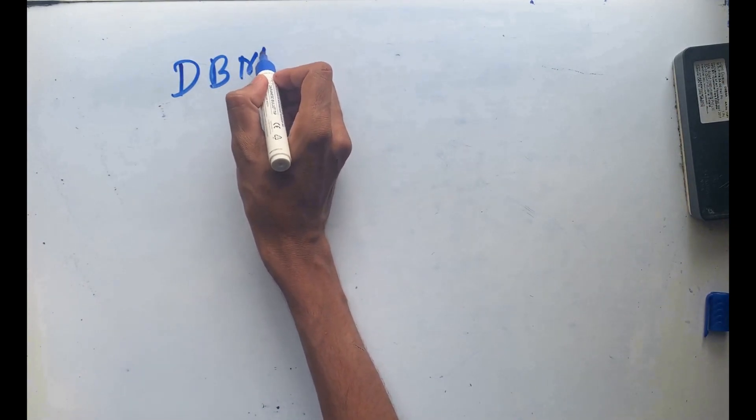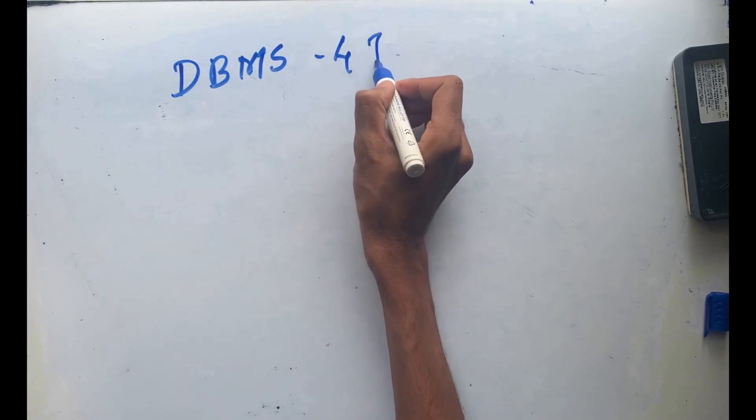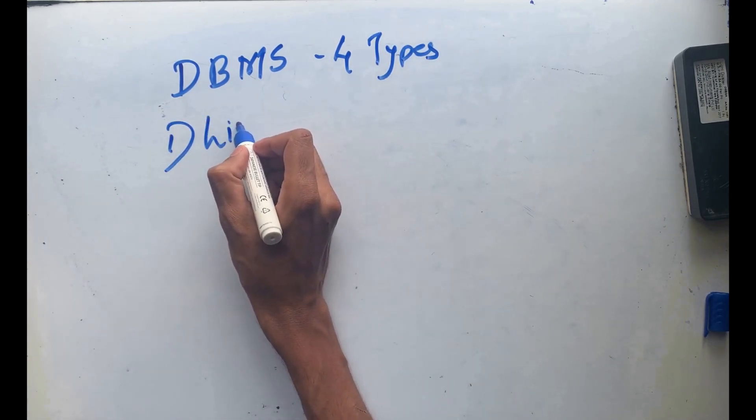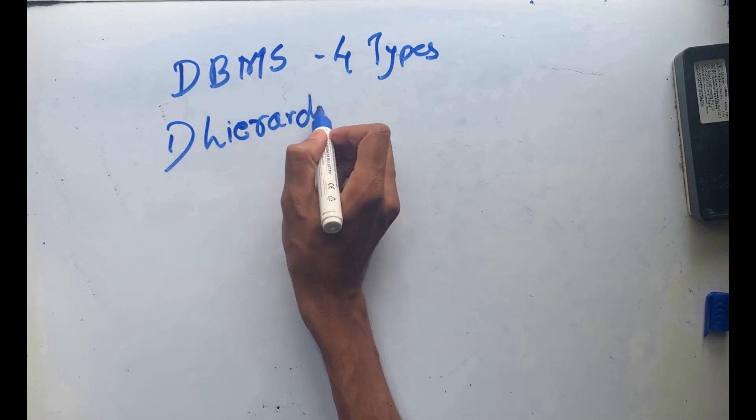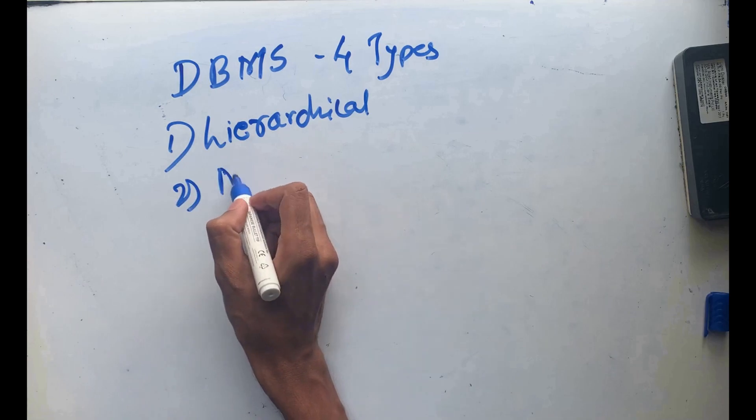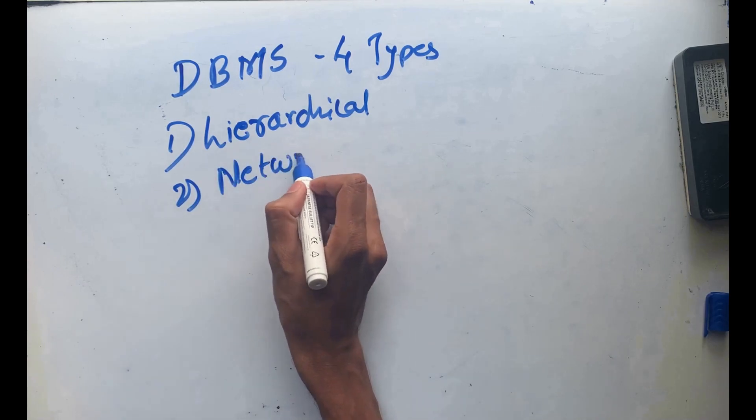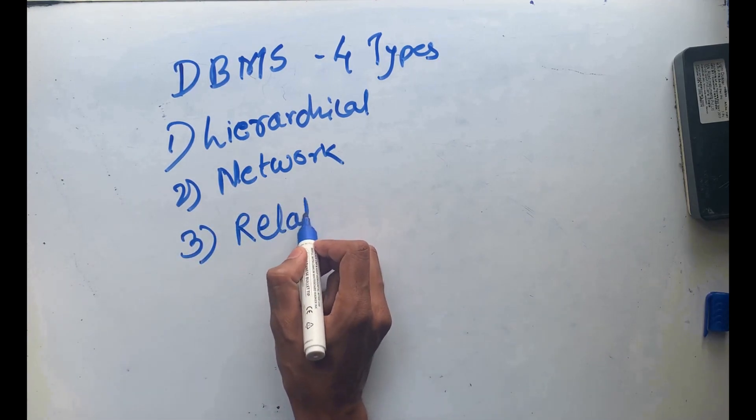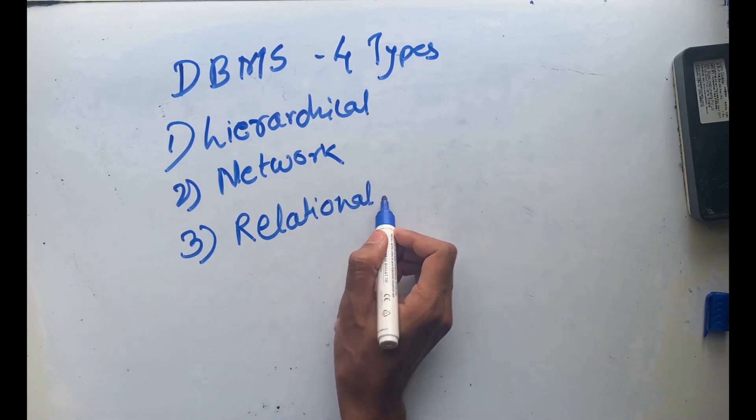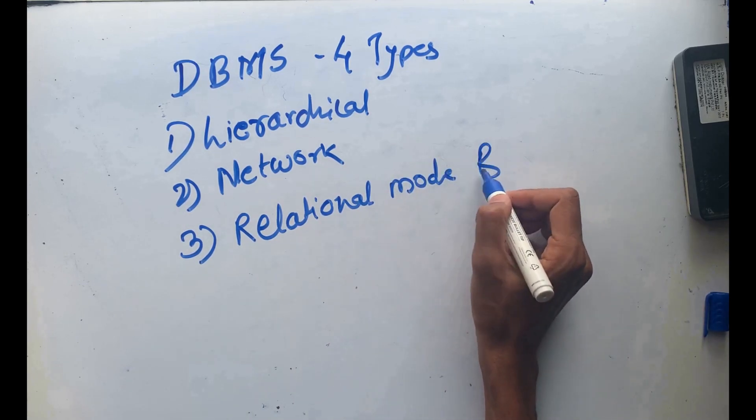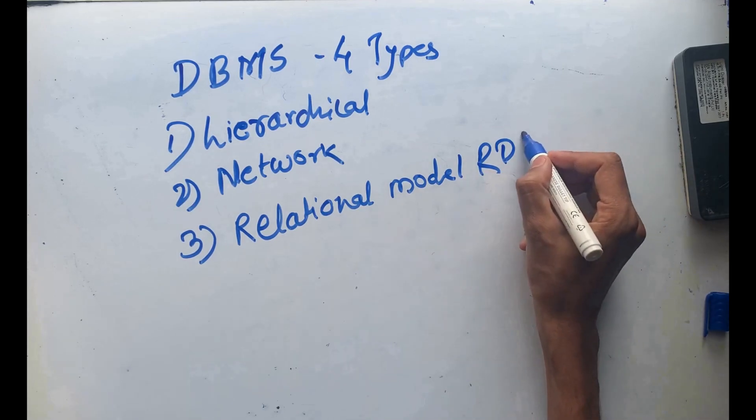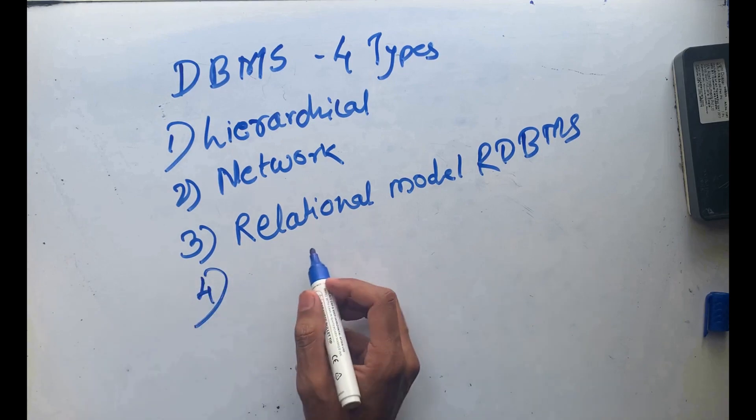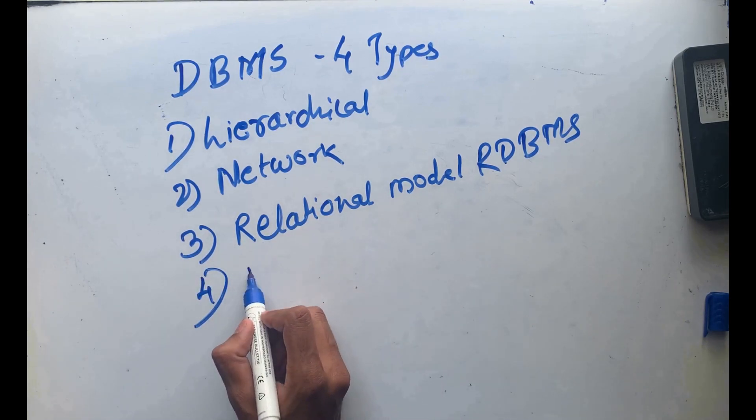DBMS has four types. One is hierarchical, second is network - we can say it is a model, hierarchical model, network model. Third is relational DBMS, and fourth one is object-oriented.